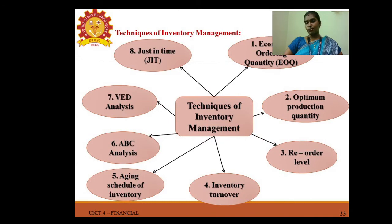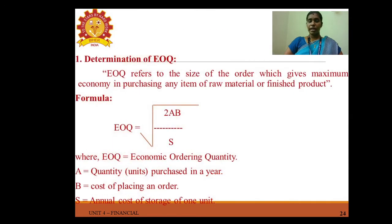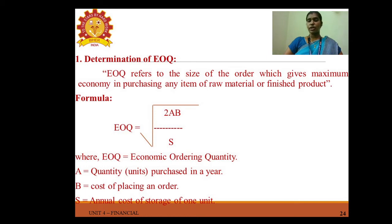Techniques of inventory management include: Economic Order Quantity (EOQ), optimum production quantity, reorder level, inventory turnover, aging schedule of inventory, ABC analysis, VED analysis, and Just-in-Time (JIT). EOQ refers to the size of order which gives maximum economy in purchasing any item of raw material or finished goods. Formula: EOQ = √(2AB ÷ S), where A = annual quantity, B = cost of placing an order, and S = annual cost of storage of one unit.